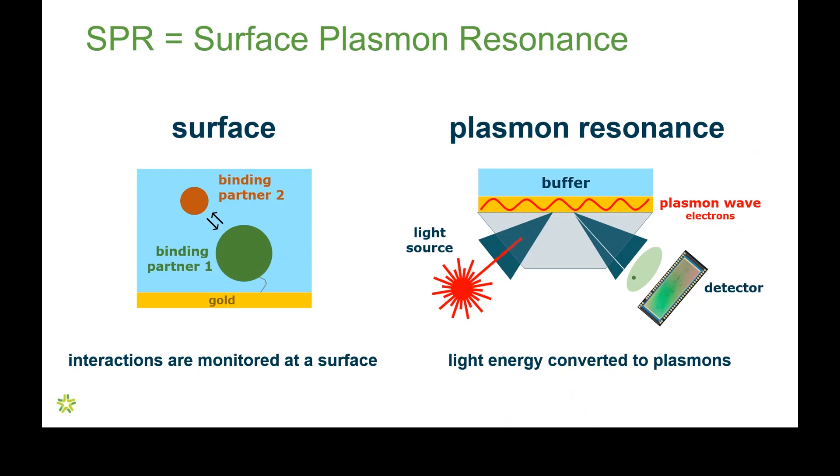SPR is surface plasmon resonance, which is made of two elements. One is a surface. One binding partner is attached to a surface, and the others float across it in solution.